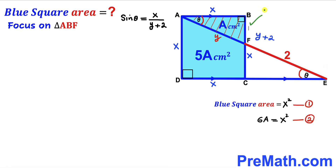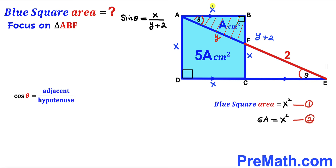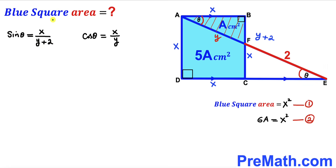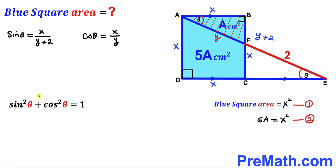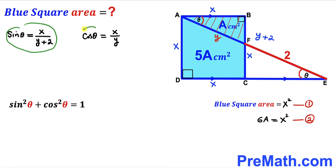Now focusing on the smaller right triangle ABF, we use the cosine ratio: cos θ = adjacent/hypotenuse. For angle θ in triangle ABF, the adjacent side is x and the hypotenuse is y, so cos θ = x/y. To summarize: sin θ = x/(y + 2) and cos θ = x/y.